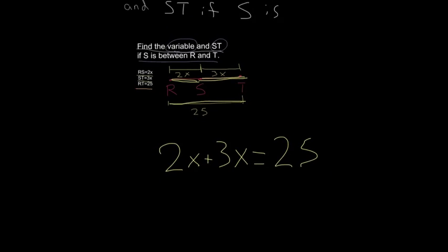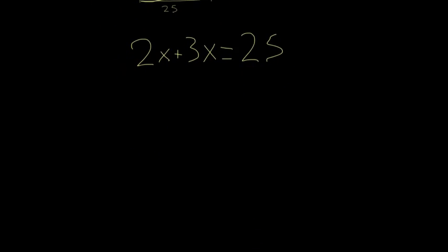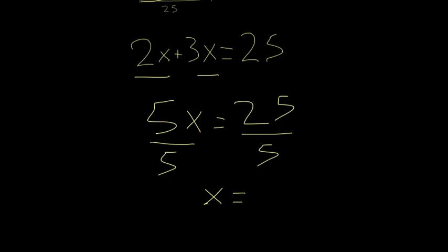From here, we can go ahead and solve using algebra. We can put our like terms together. 2X plus 3X is 5X, is going to equal 25. We can divide both sides by 5, and we're going to get X equals 5. Are we done?